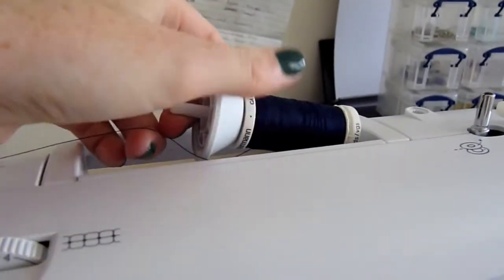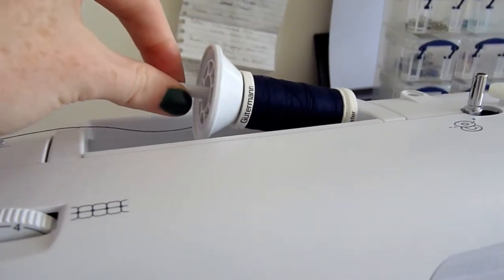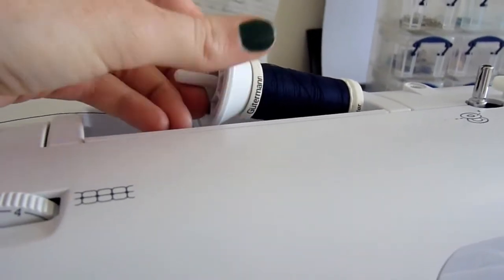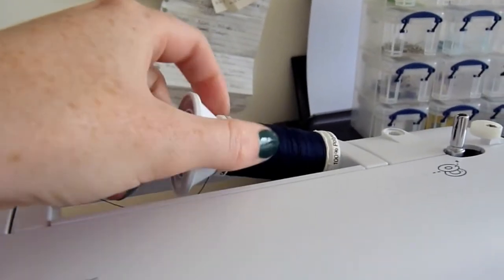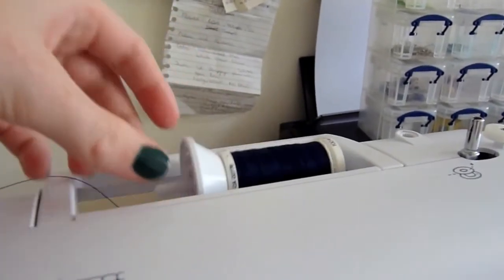You want to start off by placing your chosen thread on the spool pin, then also place the spool cap just over it like so, so the thread won't come off when you're sewing.